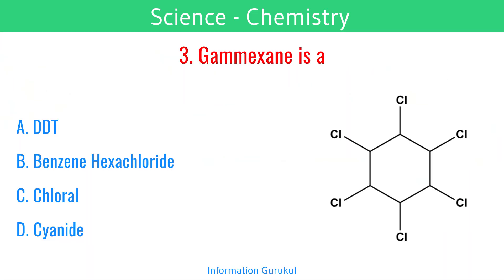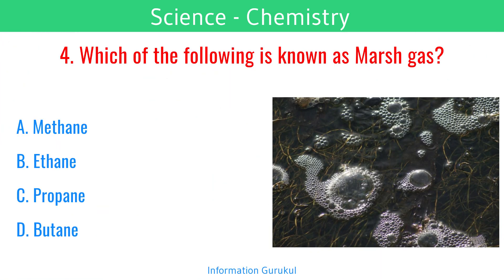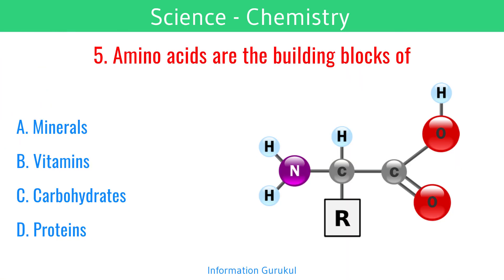Gammexen is benzene hexachloride. Which of the following is known as Marsh gas? Methane. Amino acids are the building blocks of proteins.